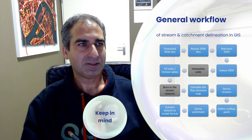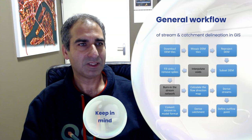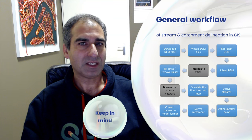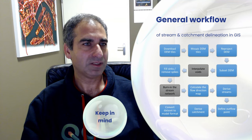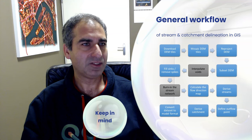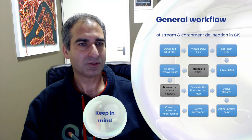Next, you can calculate the flow direction and use this to derive the streams in your model. This can be done with the flow accumulation method or with the stream order method. In both cases, a reference layer with the stream network needs to be used for calibration. This can also be a satellite image if map data is not available. Now we're almost done and need to define the outlet point on the delineated stream, otherwise we can't derive the catchment in the next step. Often this point is offset from the outlet on the map due to human modifications of the landscape or inaccuracies in the DEM. Finally, we need to export the results to our model format or create a nice map.